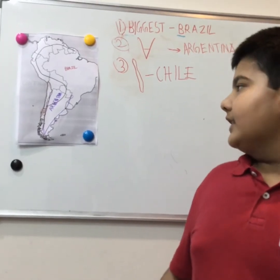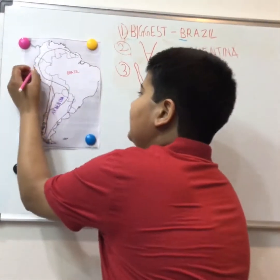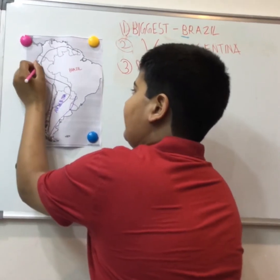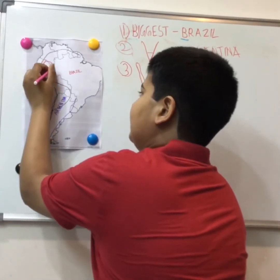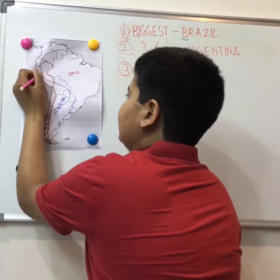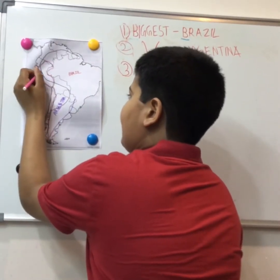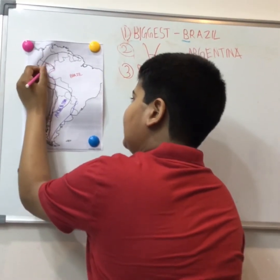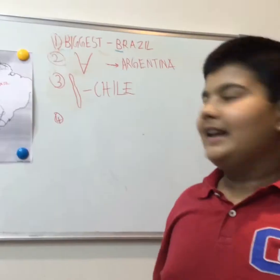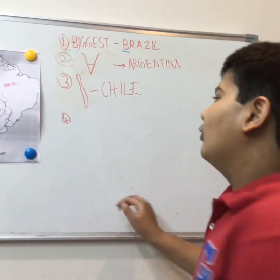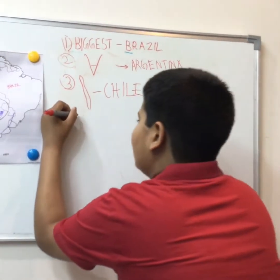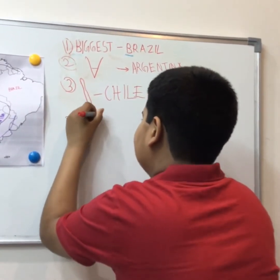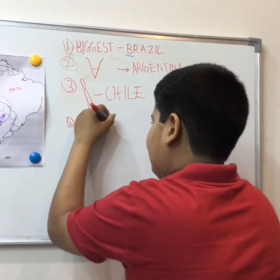The fourth country, which is very easy to learn, is Peru. It is in the shape of a P — like a P for Peru. So: P-shaped Peru.